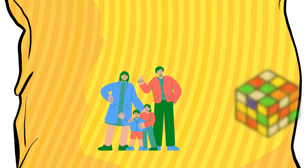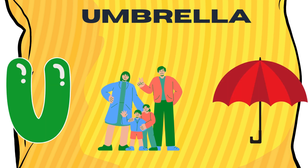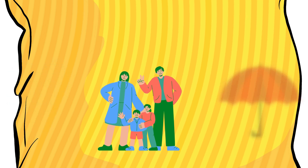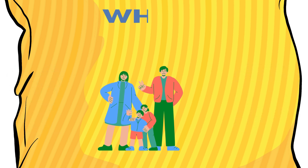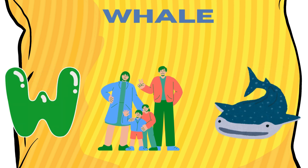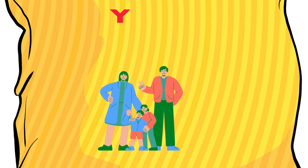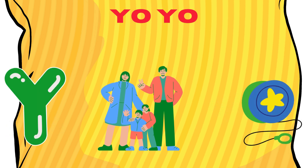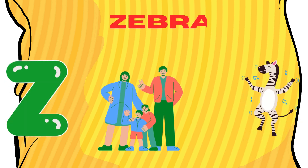T for toy, U for umbrella, V for van, W for whale, X for xylophone, Y for yoyo, Z for zebra.